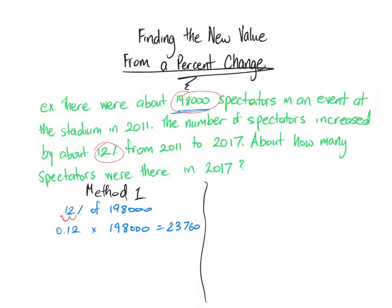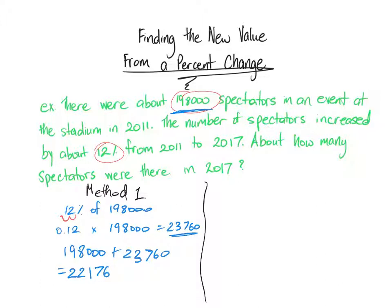This number represents the increase. So in order to figure out how many people there are in all, we take our original number — 198,000 — and add it to 23,760. And we get that in 2017, there were 221,760 spectators. That is our first method, and it is perfectly okay.